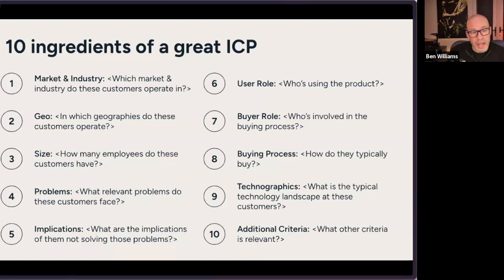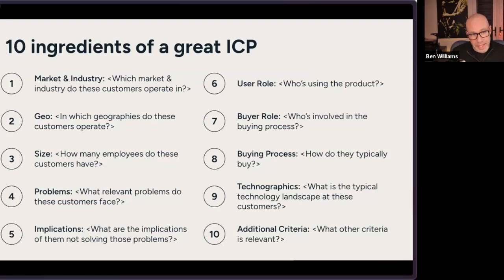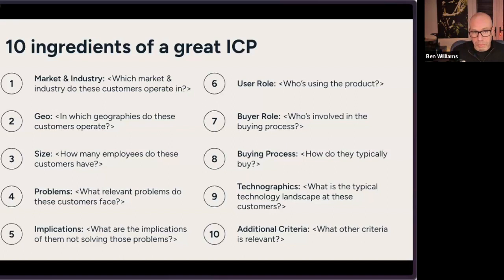These are the 10 characteristics I recommend capturing. I'll give examples as if we are a CRM company. First, which market and industry does our hypothetical perfect customer operate in? An example here might be tech, sales and marketing. Next, we want to capture which geographies our perfect customer operates in — for example, North America, EMEA, and UK. A valid answer here might be global too.